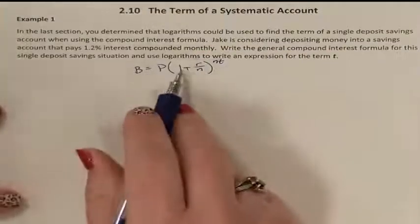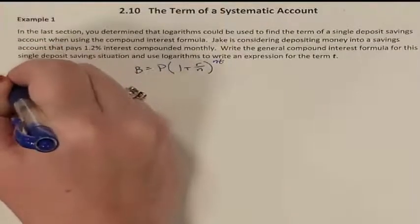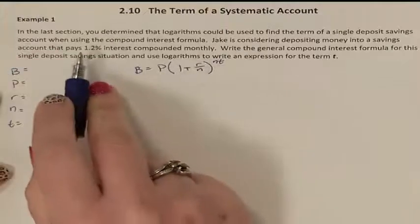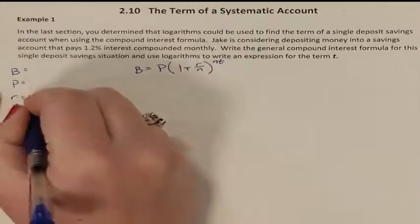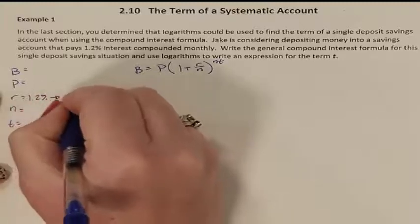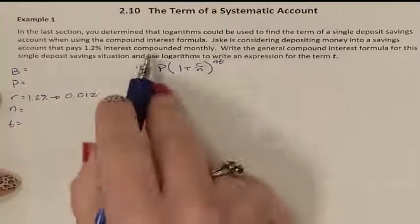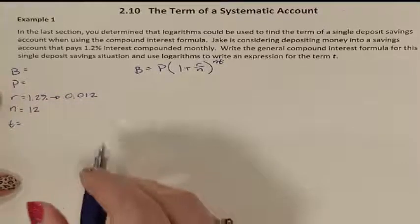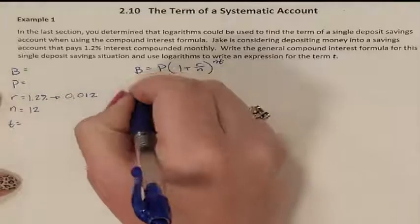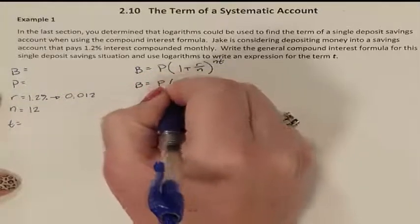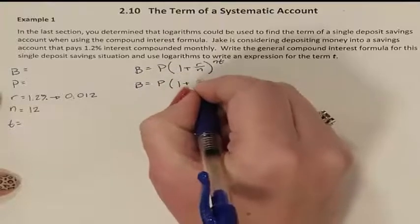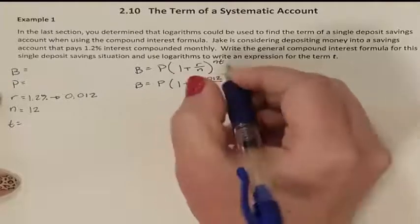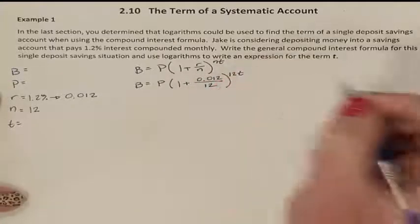This is our compound interest formula, where you need to know B, P, R, N, and T. The rate is 1.2%, which as a decimal is 0.012, and it's compounding monthly so N is 12. That is all that we know. B and P we don't know. We know R is 0.012 and N is 12, so this is raised to the 12t power.